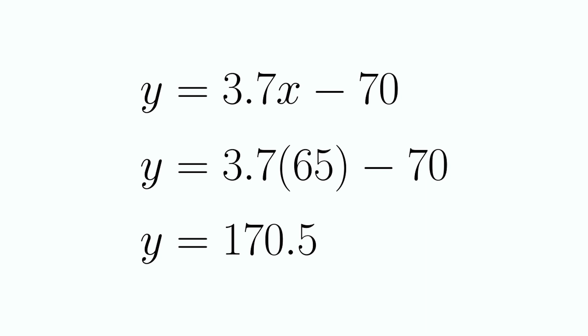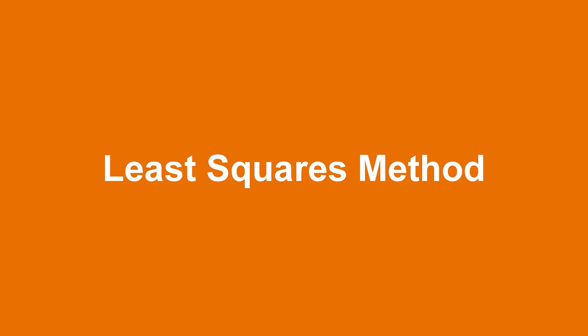The most common method for mathematically deriving values for the slope and the y-intercept is called the least squares method. Essentially, what we're trying to do is minimize the total vertical distance between all the points in our data set and the line of best fit that we eventually draw.